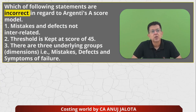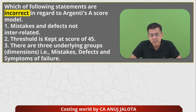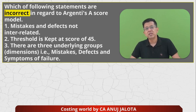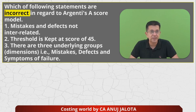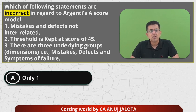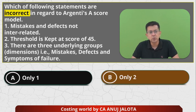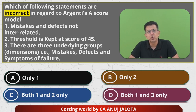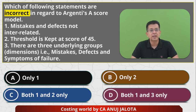The question for today is: which of the following statements are incorrect regarding Argenti's A-score model? Statement one: mistakes and defects are not interrelated. Statement two: the second threshold is kept at 45. Statement three: there are three underlying groups, that is mistakes, defects, and symptoms of failure. Which of them are incorrect? Options: only one is incorrect; only two is incorrect; both one and two are incorrect; or both one and three are incorrect. If you remember Argenti's A-score, you know the correct answer — try to put that in the comments.